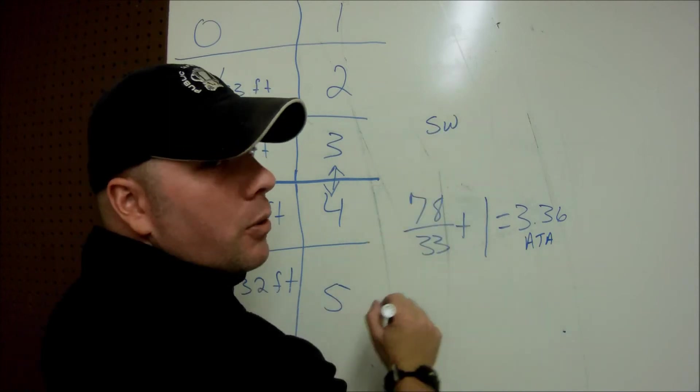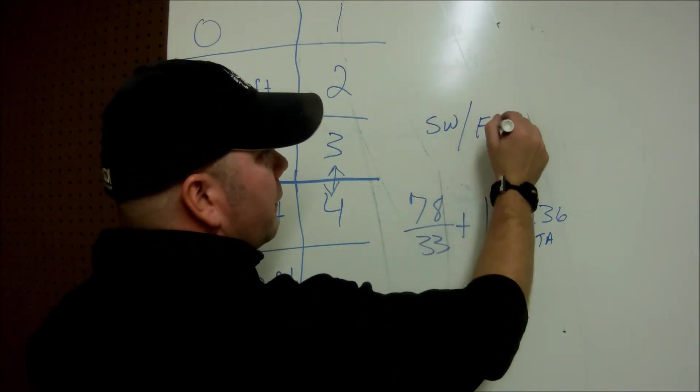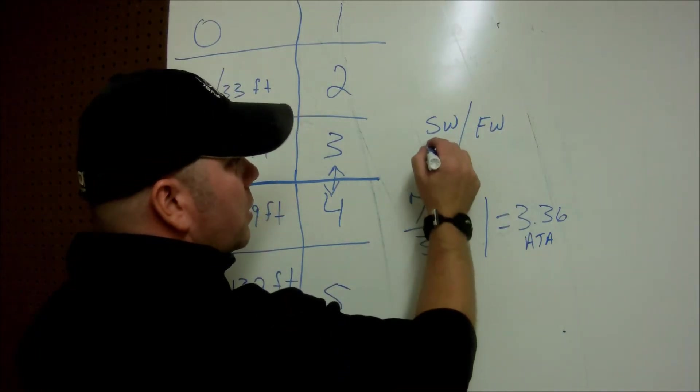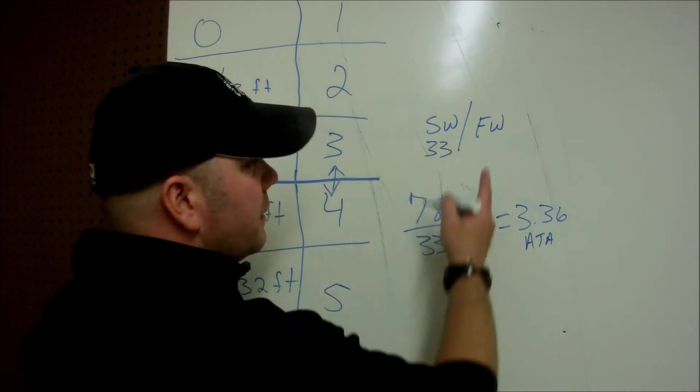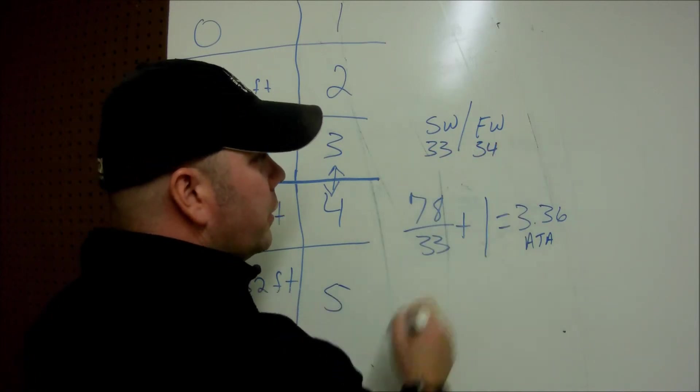are we talking about salt water or are we talking about fresh water? If it's salt water, you will use 33 increments. If it's fresh water, you will use 34 increments.